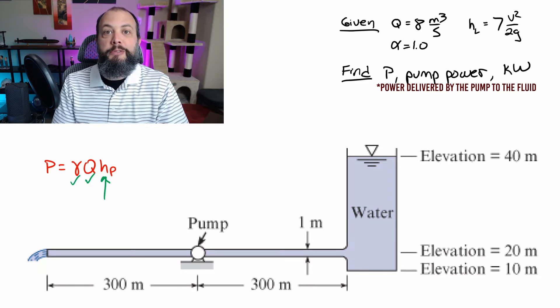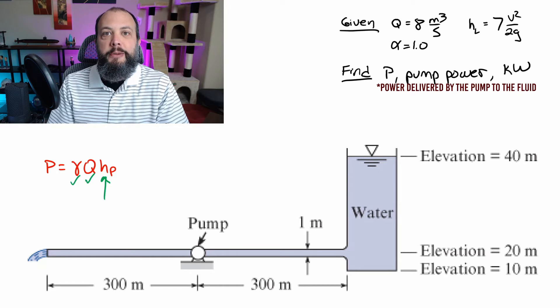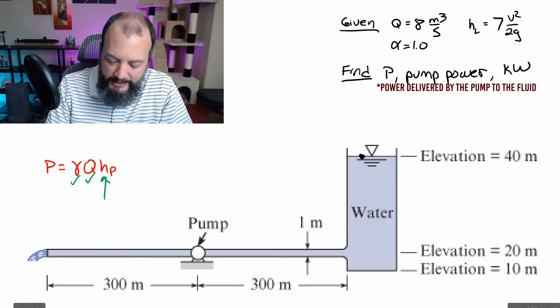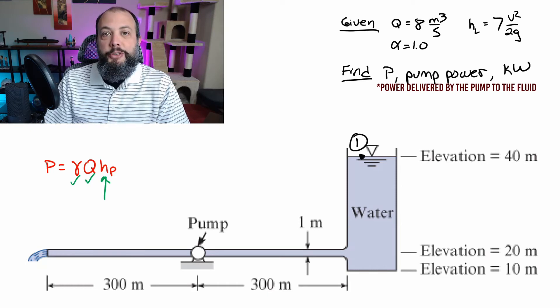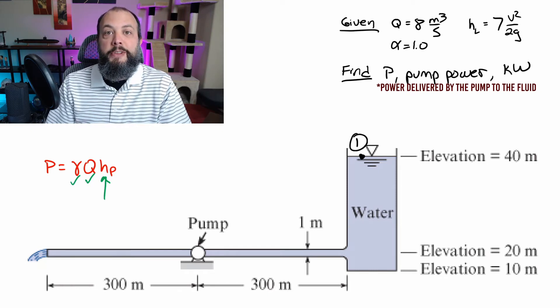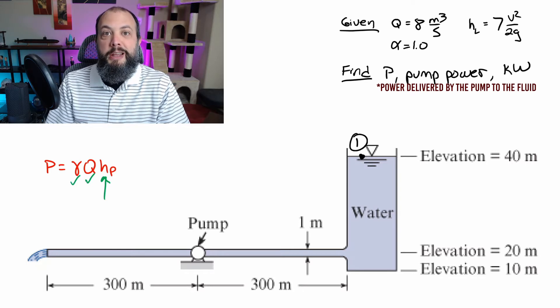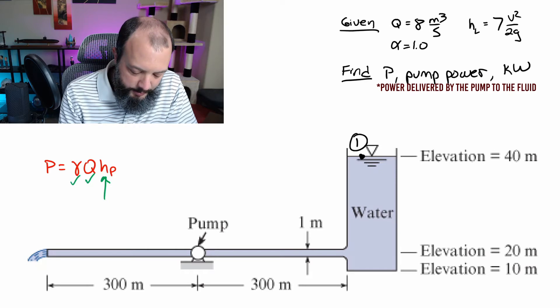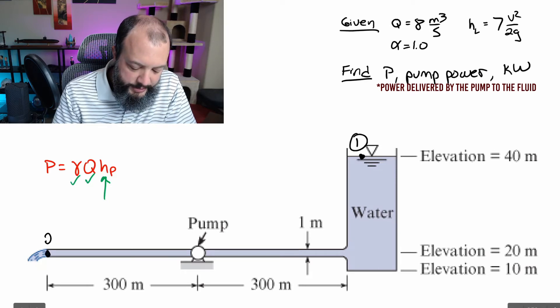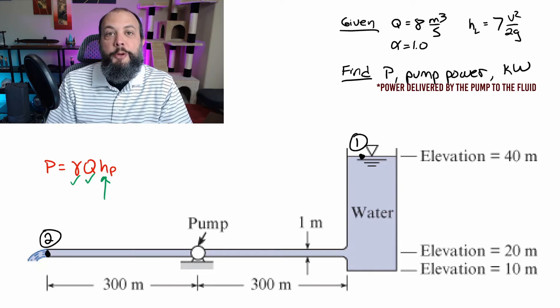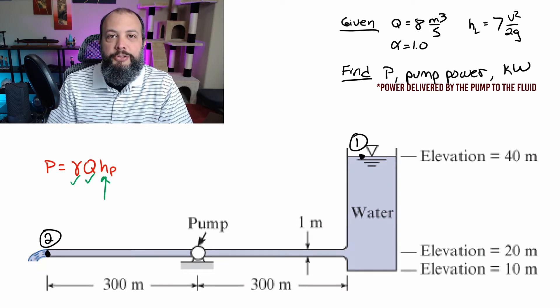So first step when using the energy equation is to add some points to your drawing, you need to label point one and point two that the two points that you are comparing to each other. And whenever you have a tank, it's almost always best to choose one of your points at the top of the tank, since you'll assume that the speed of the tank lowering is going to be very slow. So you can call that a velocity equals zero. And it's also going to be at atmospheric pressure, which will normally cancel out. Since we have an exit of the pump at the other end, I'm going to choose that point as my point two. So that term will have velocity, but it's also at atmospheric pressure. So that allows us to cancel out an extra term.